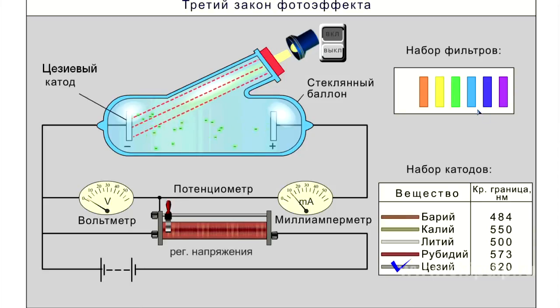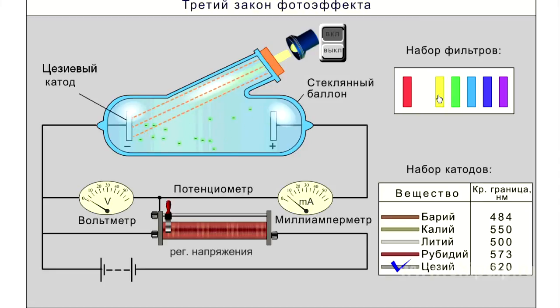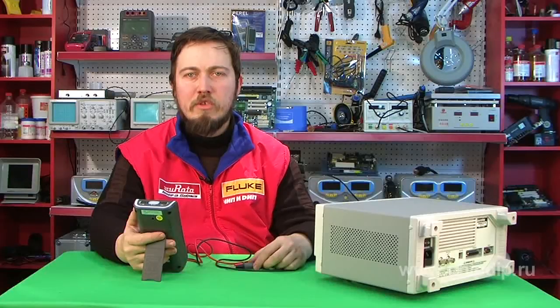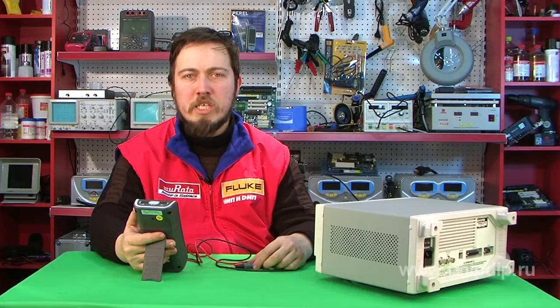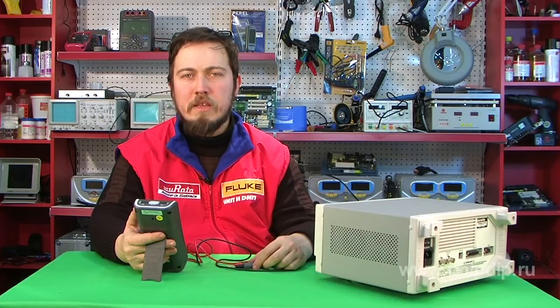The threshold frequency of alkaline metals — potassium, sodium, cesium — is higher, and they are even sensitive to the visible radiation. In conclusion, the photoelectric effect is used to convert radiant energy into electric energy, electric current. Devices based on the photoelectric effect are called photocells.